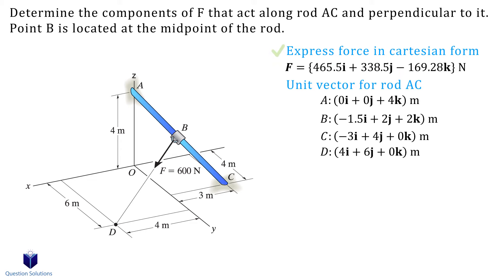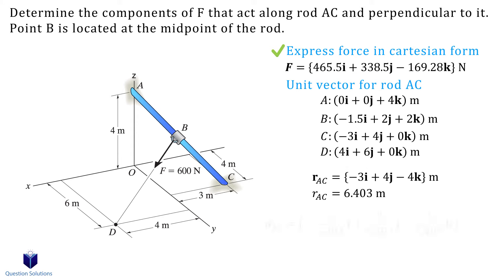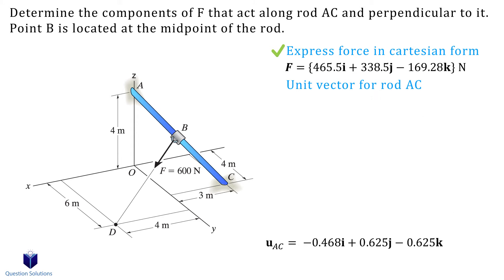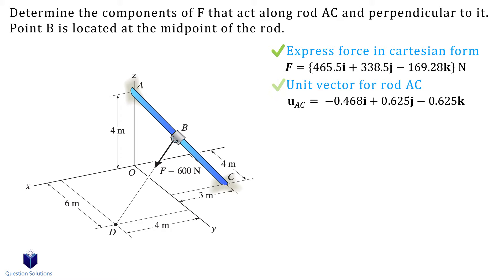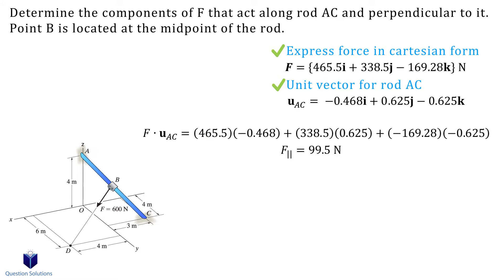Now we need a unit vector for rod AC — the process is pretty much the same. First, a position vector from A to C. Now the magnitude, and lastly the unit vector. Let's write it in decimal form. Now all that's left is to take the dot product between the force and the unit vector. Solving this gives us the component of the force that is along rod AC.